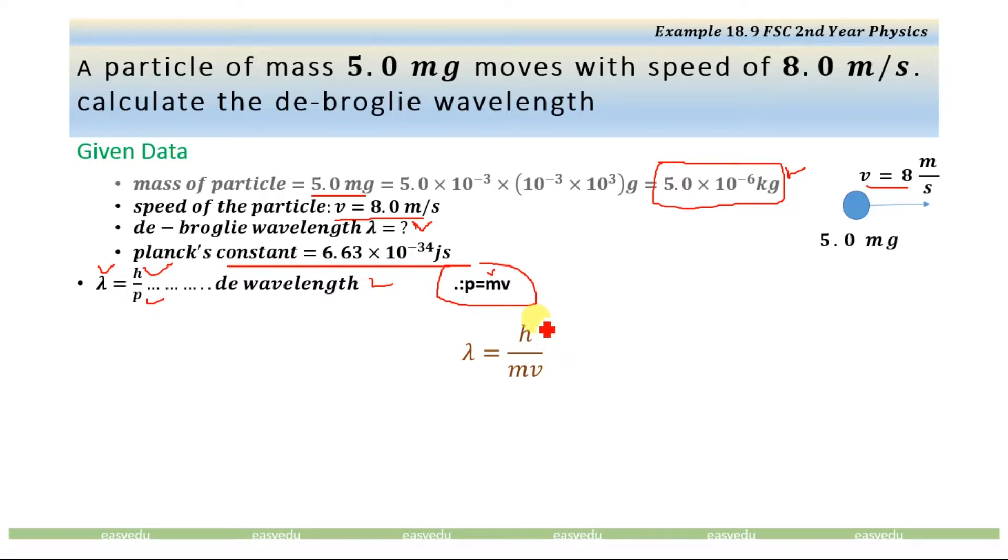Now we have the value of Planck's constant which is 6.63 × 10⁻³⁴, the value of mass and the value of velocity. Substituting the values for Planck's constant, mass of the particle, and velocity of the particle.